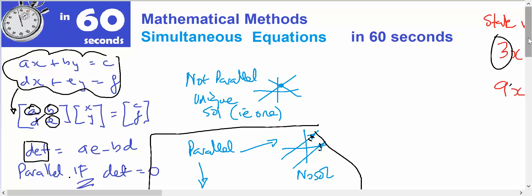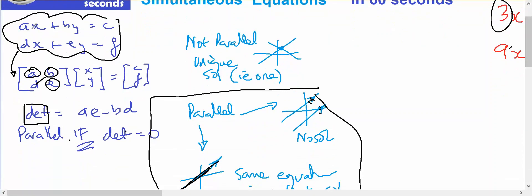Methods for simultaneous equations in 60 seconds. Turn your equations into a matrix. Work out the determinant: A times E minus B times D.